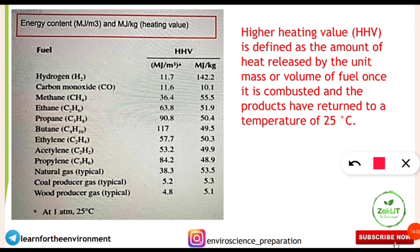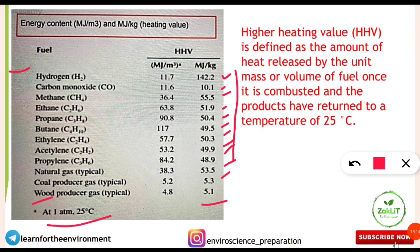Note down these values — the maximum HHV is for hydrogen at 142.2 MJ/kg. Carbon monoxide is 10.1, methane is 55.5, ethane is 51.9, propane is 50.4, butane is 49.5, ethylene is 50.3, acetylene is 49.9, propylene is 48.9, natural gas is 53.5, coal producer gas is 5.3, and wood is 5.1. These values are all given at one atmospheric pressure and 25°C, as per the HHV definition.